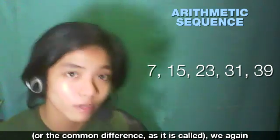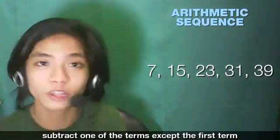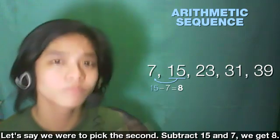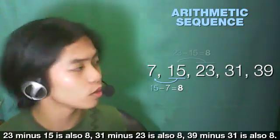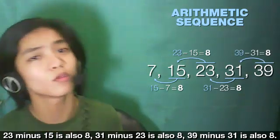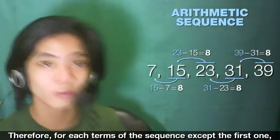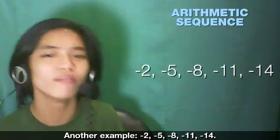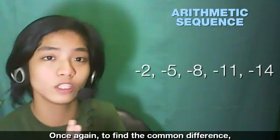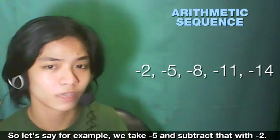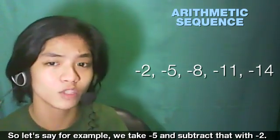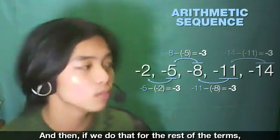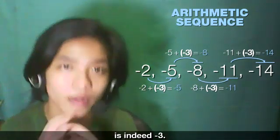Here's another example. To find the common difference, we subtract one of the terms from the one before it. Subtracting 15 from 7 gives 8, and 23 minus 15 is also 8, 31 minus 23 is also 8, 39 minus 31 is also 8. So the common difference is 8. Another example: -2, -5, -8, -11, -14. Taking -5 minus -2 gives -3, and this holds for all consecutive terms, so the common difference is -3.